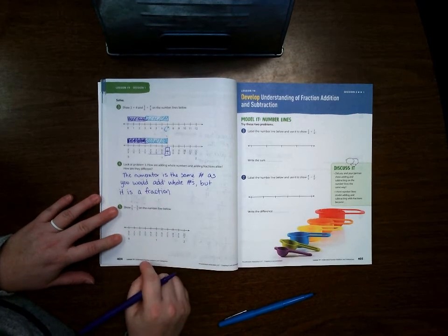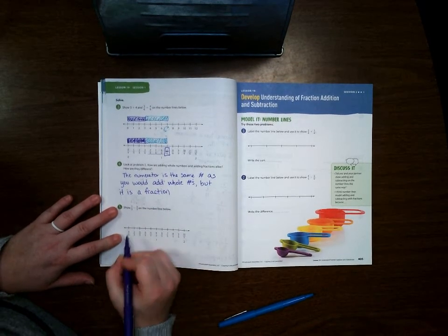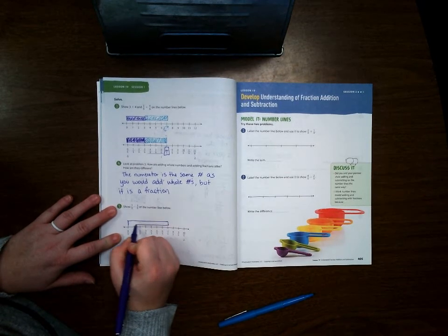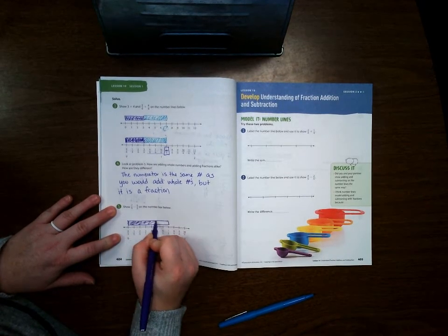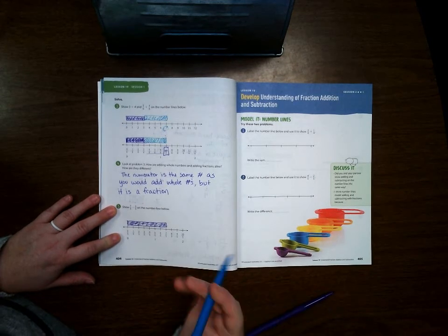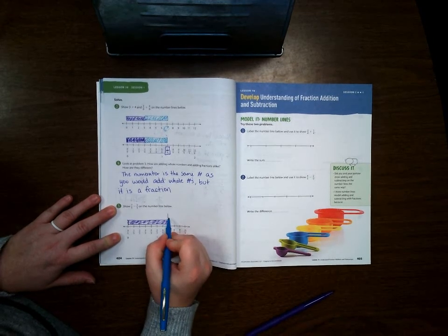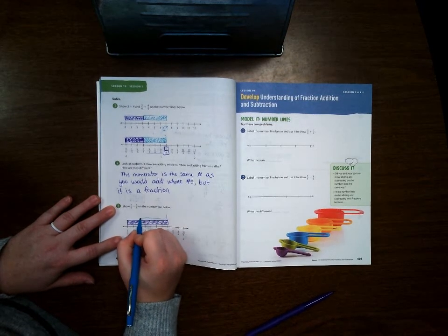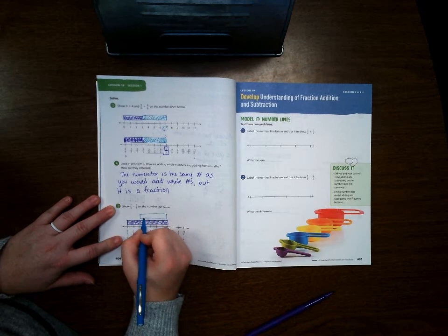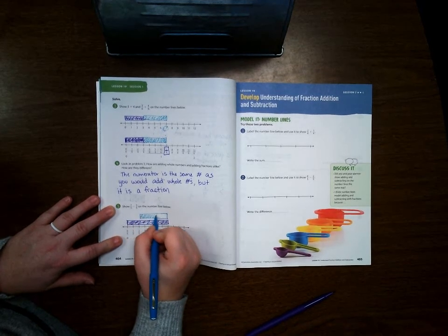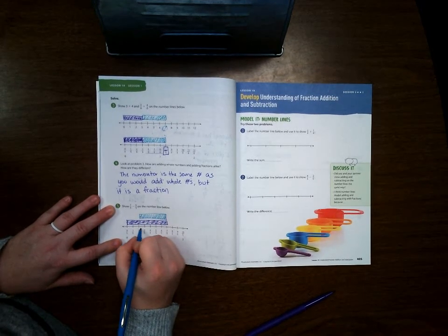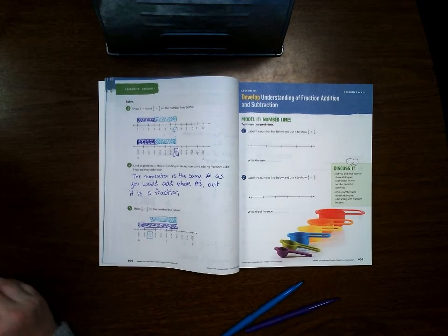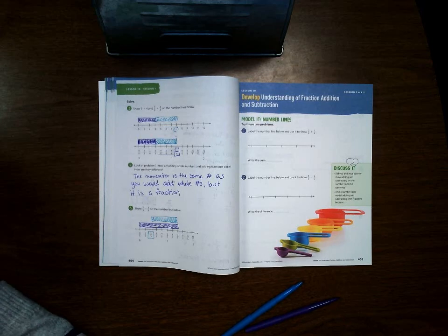Down here, so 7/5 minus 5/5 on the number line. So we're going to start with our 7/5, and then when we're subtracting we start and we just go on top of it, and we're going to subtract 5/5. 5/5 is the same thing as one whole because it's the same number on top and bottom, which gives us an answer of 2/5. That is it for lesson one, and I will see you back on page 405 for lesson two.